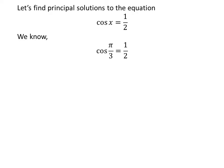We know the value of cosine of pi upon three is half. We also know that the value of cosine of x repeats after the interval of two times pi, so cosine of two times pi minus a is equal to cosine of minus a. We also know the trigonometric identity cosine of minus a is equal to cosine of a.